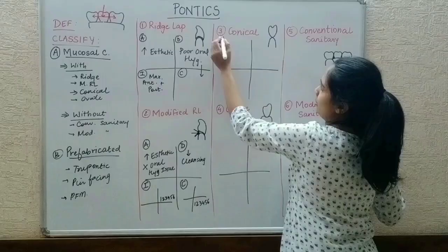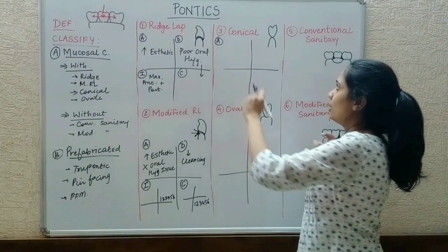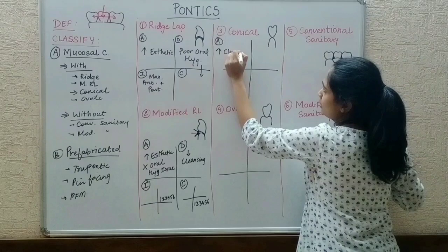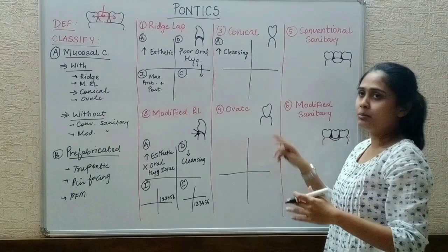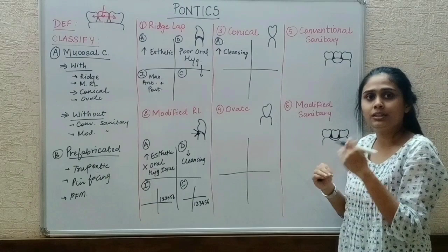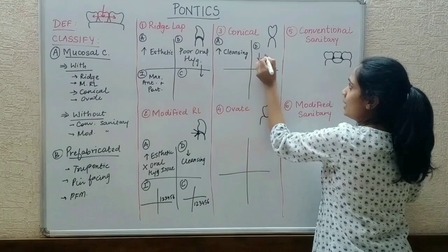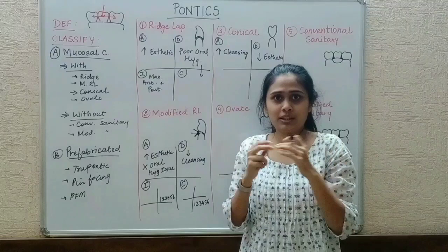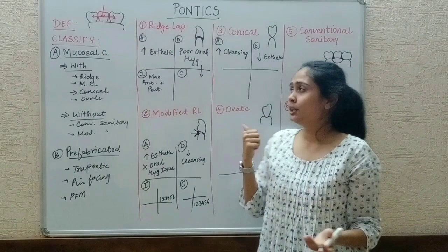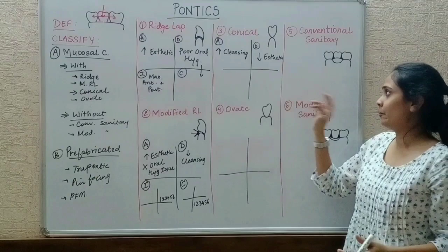Moving on to conical pontics. The advantage is that since it only has contact at one surface, it is very cleansable — superior cleansing properties. As it just contacts the ridge at one point, everything else is open in the oral cavity, making it easy for the patient to clean. So there is increased cleansing and good oral hygiene. The disadvantage is decreased aesthetics — it looks like the teeth are floating on the ridge, which is not aesthetic at all.